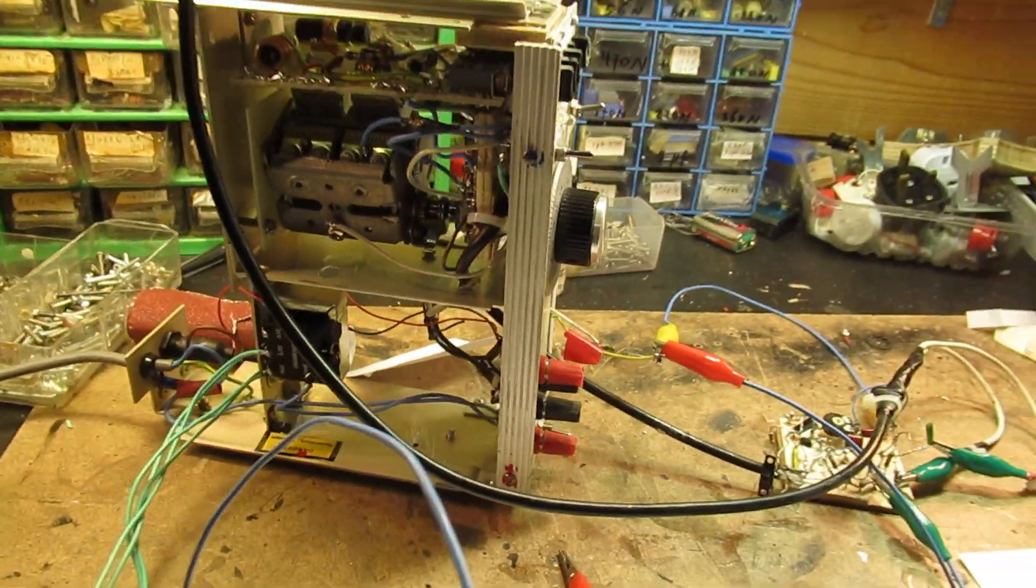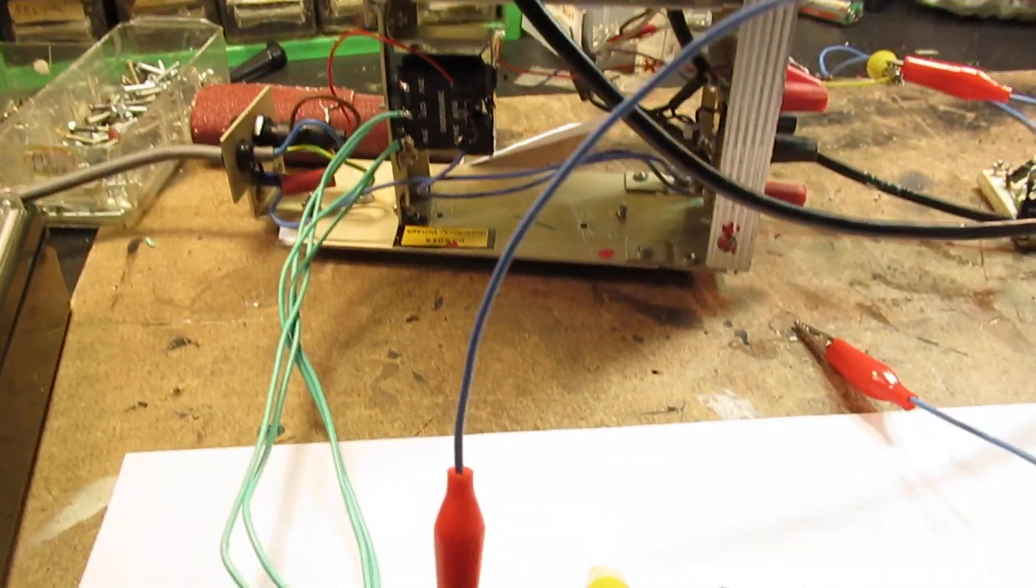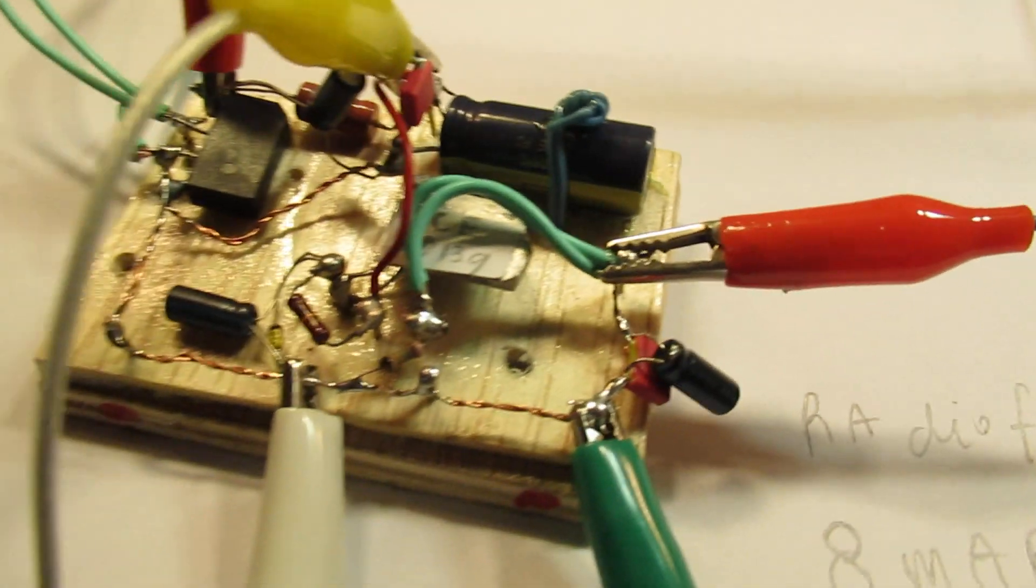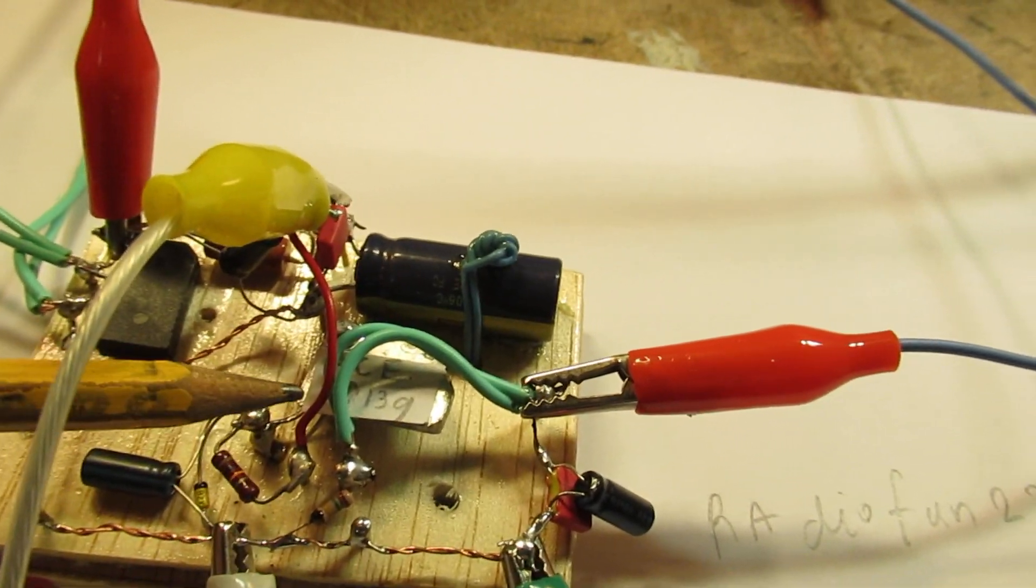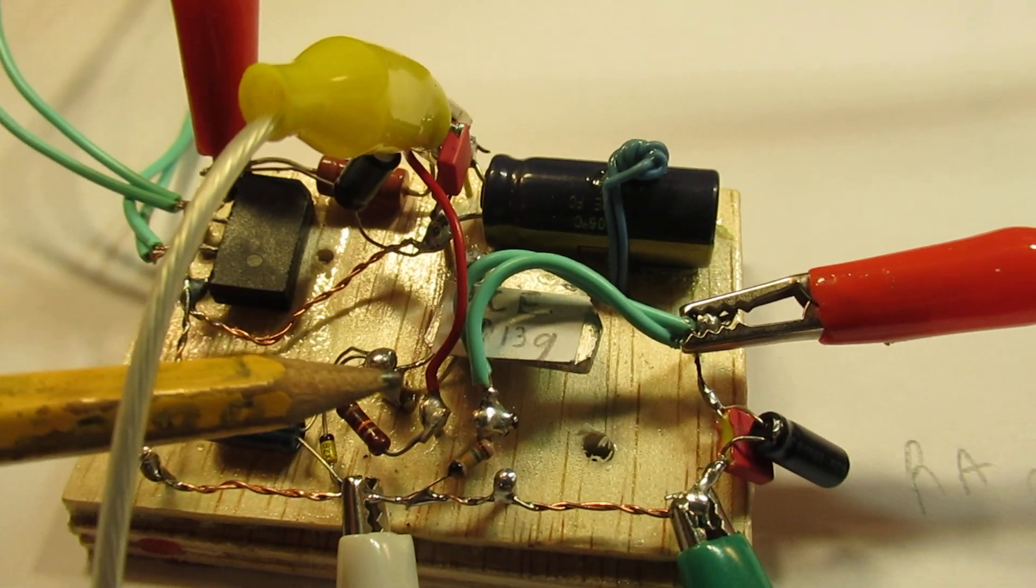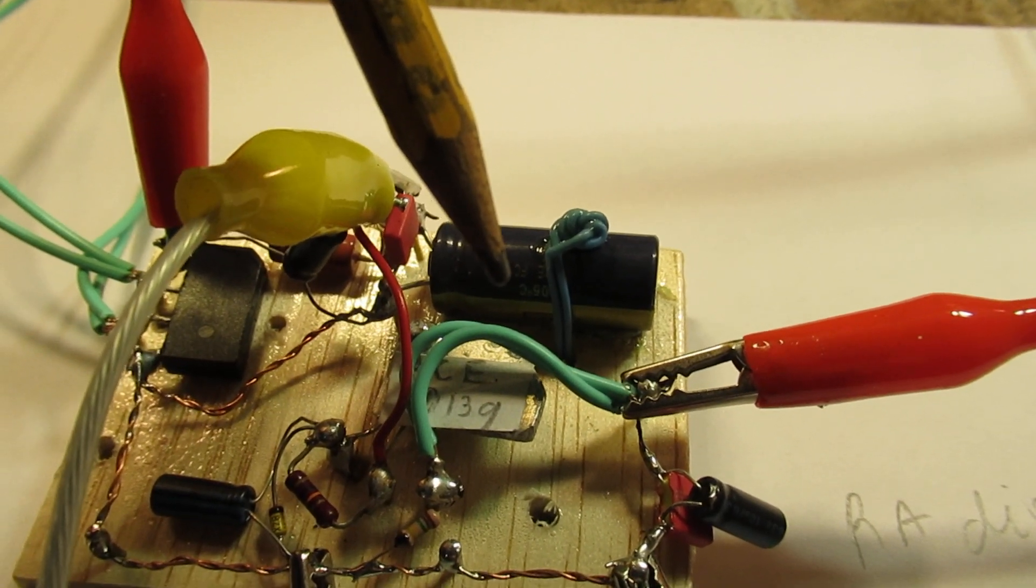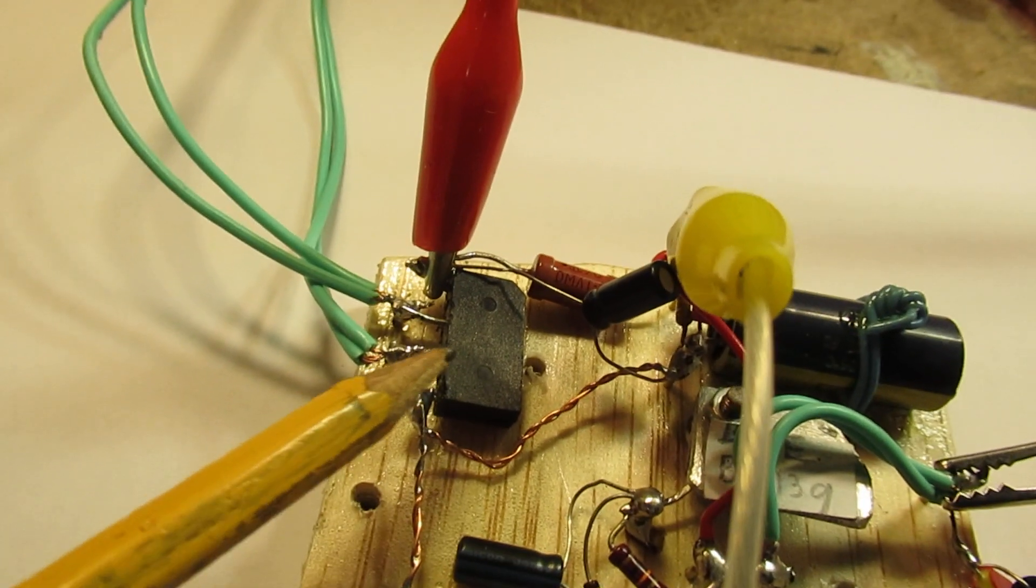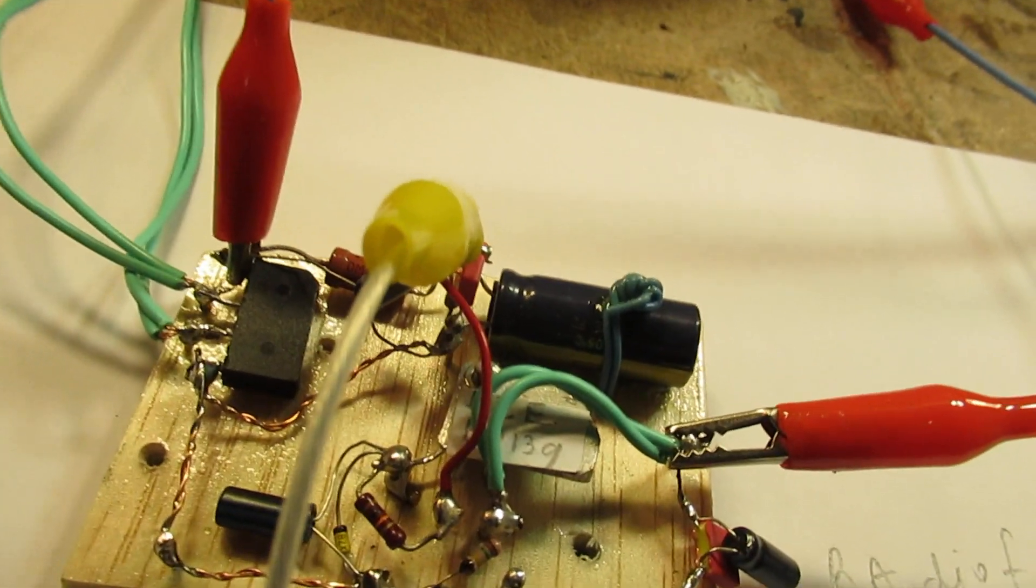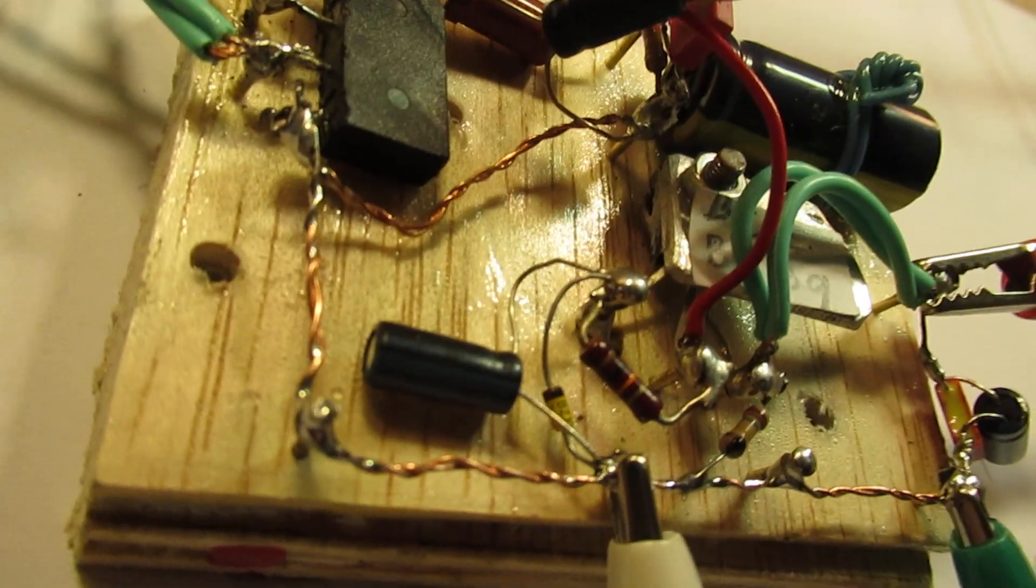I want to show the schematic a little bit. Here is the BD-139 transistor, a little bit covered by wiring. Here is the capacitor directly connected to the bridge rectifier. Here is the bridge rectifier and all the other capacitors. And here, perhaps visible, is that a zener diode, it's yellow.